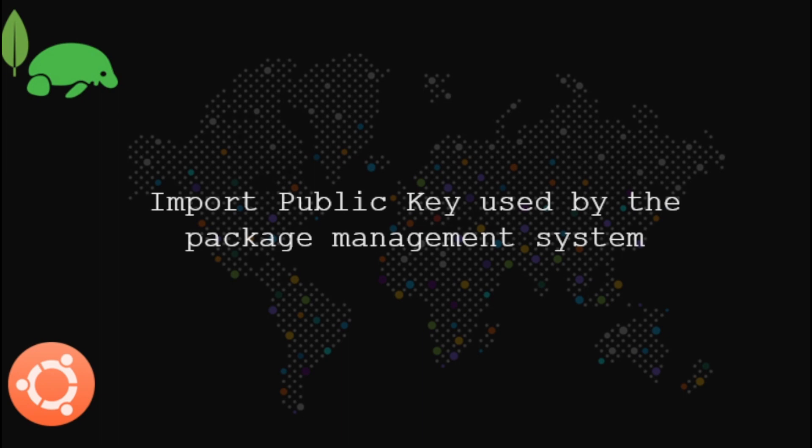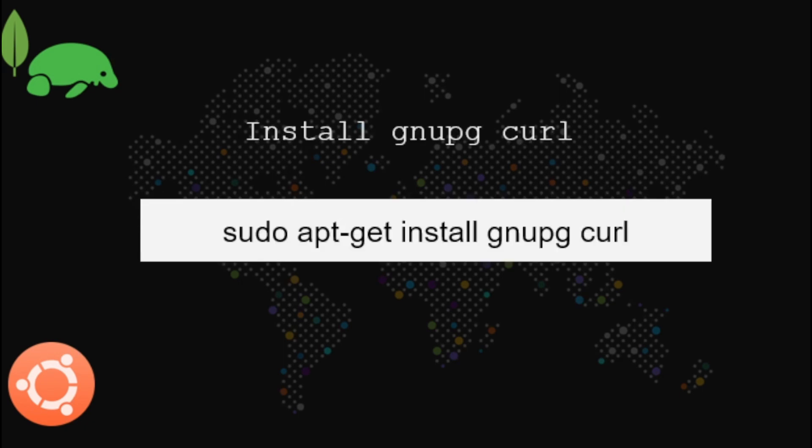First, we need to import our public key to use by the package management system. To start with, let us install gnupg and curl.